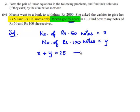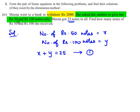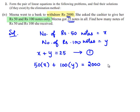Name this as equation number 1. And the other condition is, Meena asked the cashier to give her Rs. 50 and Rs. 100 notes only to withdraw Rs. 2000. So we can write, 50 times X plus 100 times Y is equal to 2000. This is equation number 2.